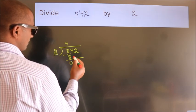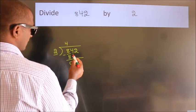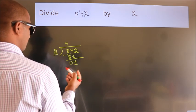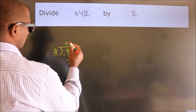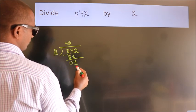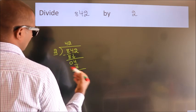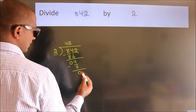After this, bring down the beside number. So, 4 down. When do we get 4? In 2 table, 2 2s, 4. Now, we subtract. We get 0.